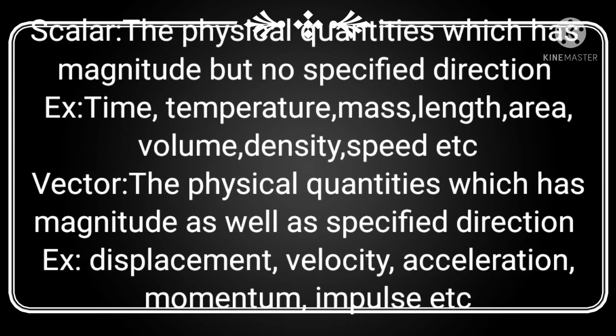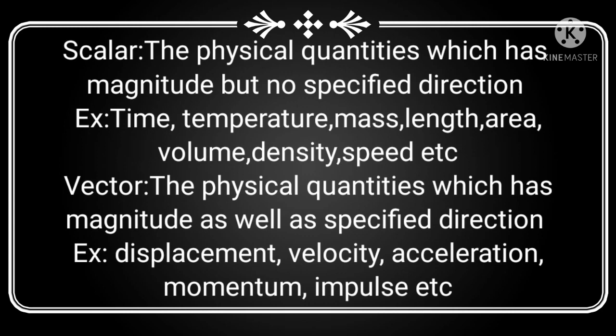A scalar quantity is a physical quantity that has magnitude but no direction. Examples: time, temperature, mass, length, area, volume, density, speed, etc. A vector quantity is a physical quantity that has both magnitude and a specified direction. Examples: displacement, velocity, acceleration, momentum, impulse, weight, etc.